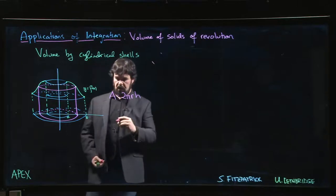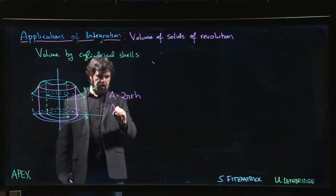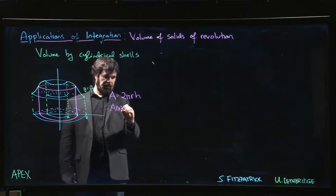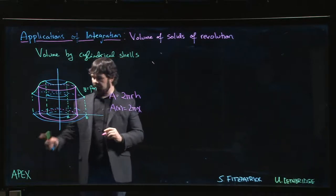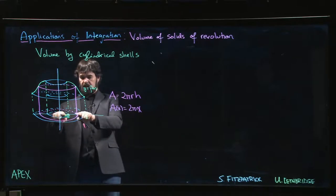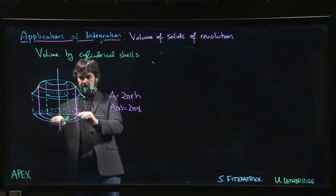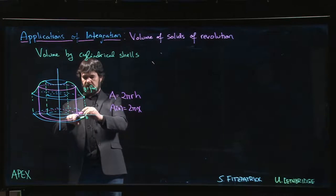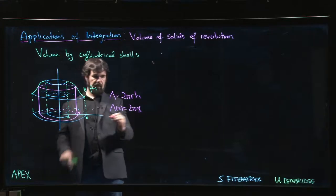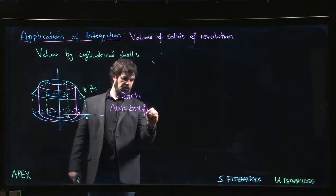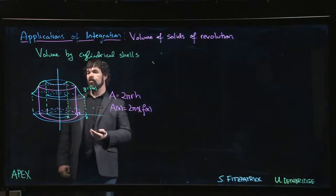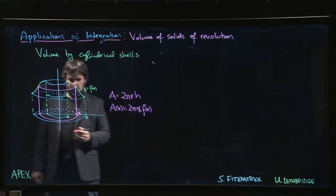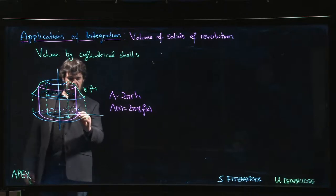That area actually depends on x. The radius is just x—the radius of the cylinder is just x. The height of the cylinder, well that's f(x), it's just the y value. So we can express the area of the cylinder in terms of x. You can imagine that you might thicken that cylinder slightly, by an amount Δx.